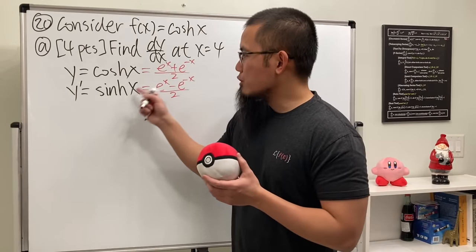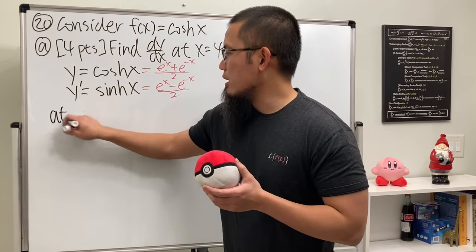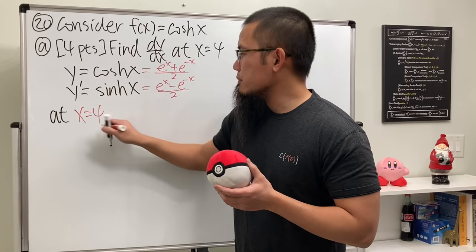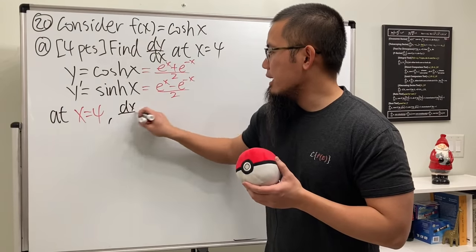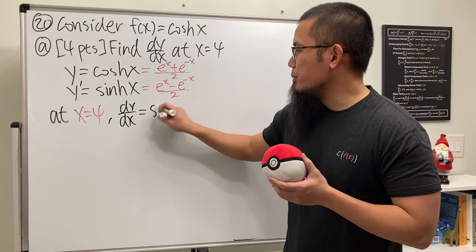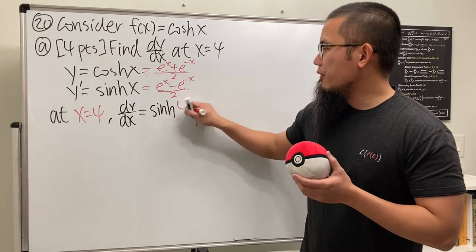At x equals 4, I'm just going to be plugging 4 in here. So at x equals 4, we know dy/dx, which is the slope of the tangent line, is just going to be sinh(4).